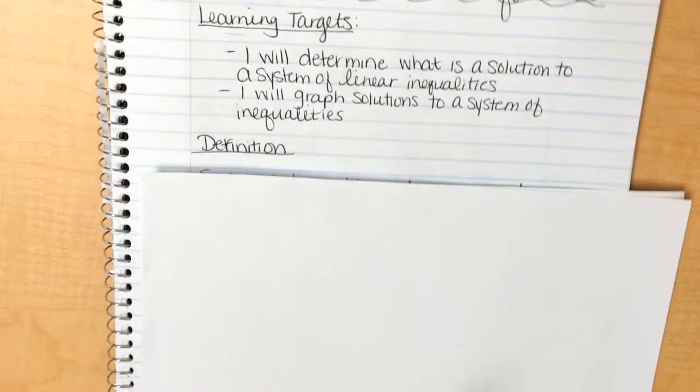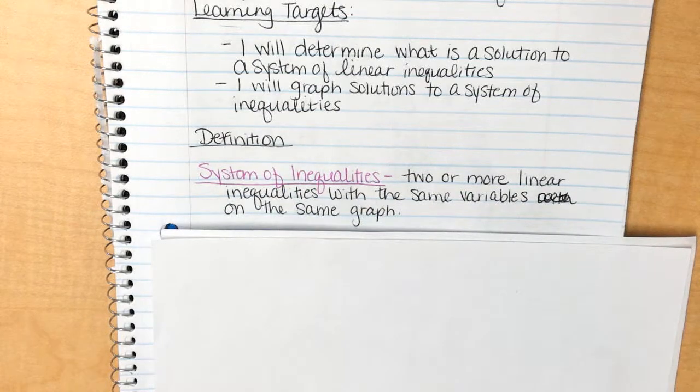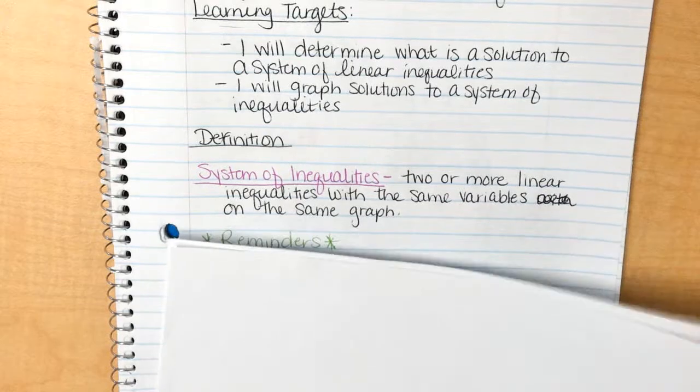So definition - and notice I just say definition because there's only one of them. A system of inequalities is two or more linear inequalities with the same variables on the same graph. So just like a normal system, except this time it's an inequality. Remember, inequalities are the ones where we shade, where we shade up versus shading down.